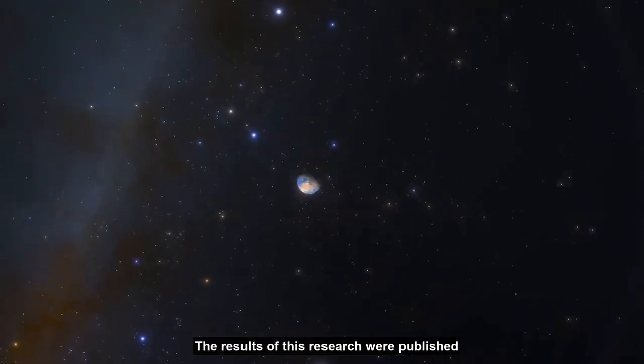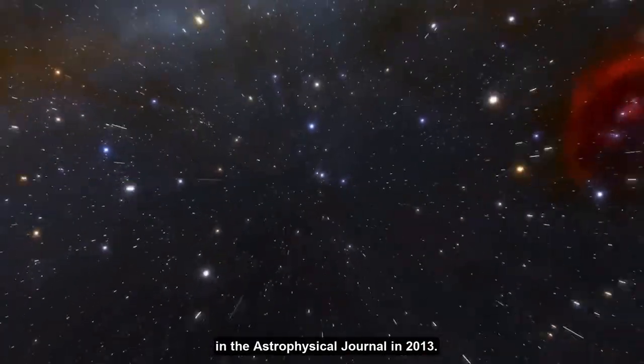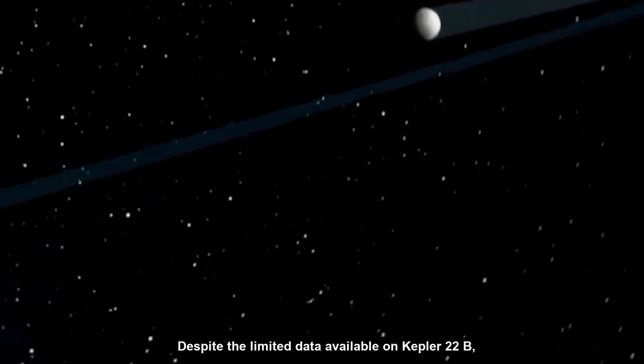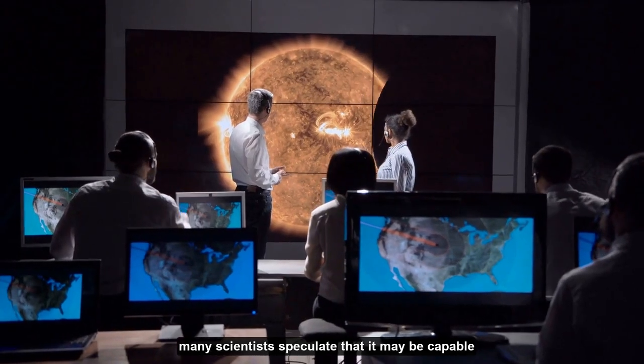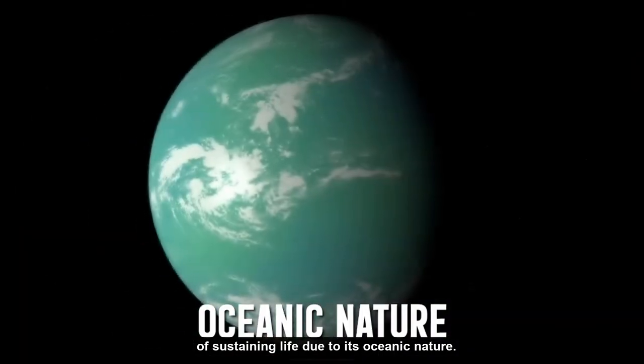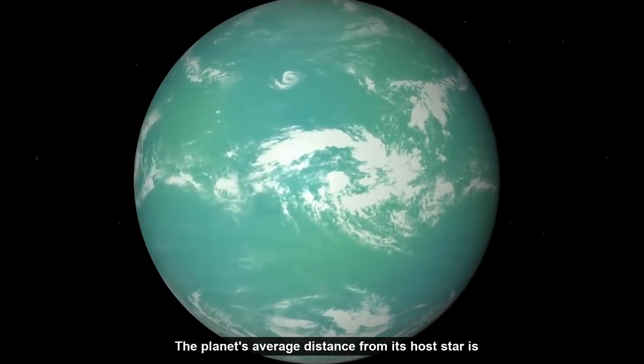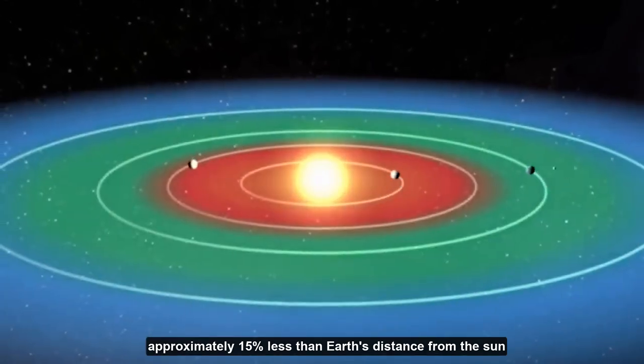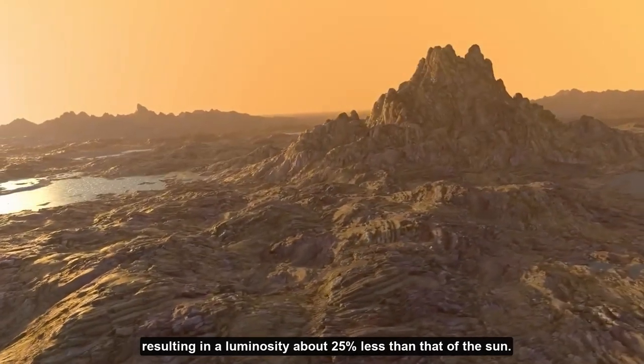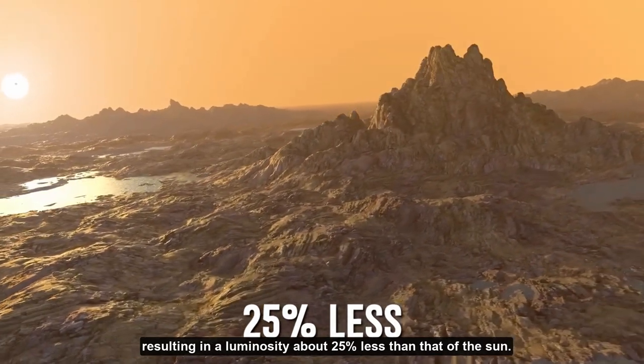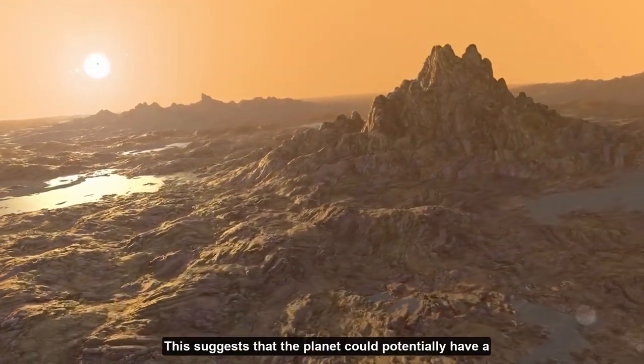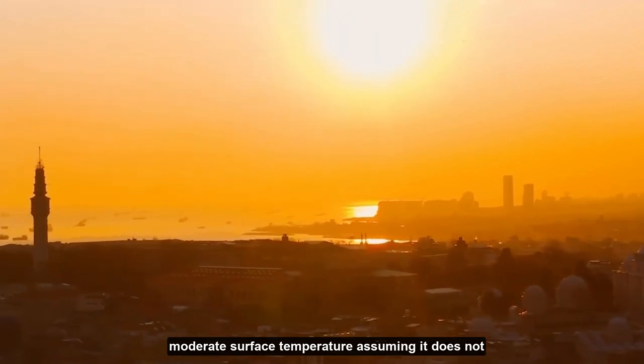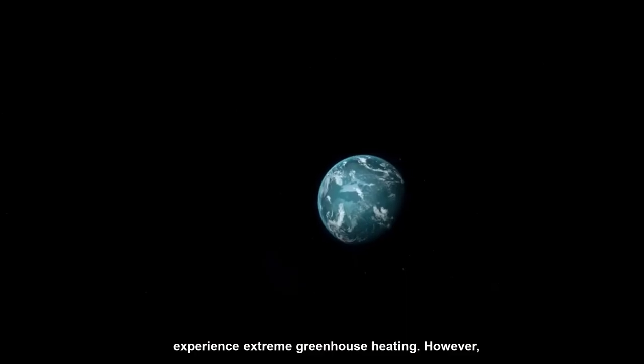The results of this research were published in the Astrophysical Journal in 2013. Despite the limited data available on Kepler-22b, many scientists speculate that it may be capable of sustaining life due to its oceanic nature. The planet's average distance from its host star is approximately 15% less than Earth's distance from the Sun, resulting in a luminosity about 25% less than that of the Sun. This suggests that the planet could potentially have a moderate surface temperature, assuming it does not experience extreme greenhouse heating.